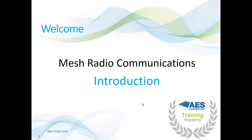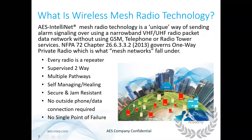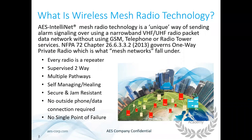Thank you everybody for taking the time to join us to talk about mesh radio. I've been working with AES doing training for the last couple years, and one of the most misunderstood portions of working with this technology is antenna selection. First, I want to go over mesh radio technology. It's a unique way of sending alarm signals using narrow band VHF or UHF radio packet data. We fall under NFPA 72 Chapter 26.6.3.3.2 — the 2013 version — which governs all one-way private radio, and this is what mesh networks fall under.